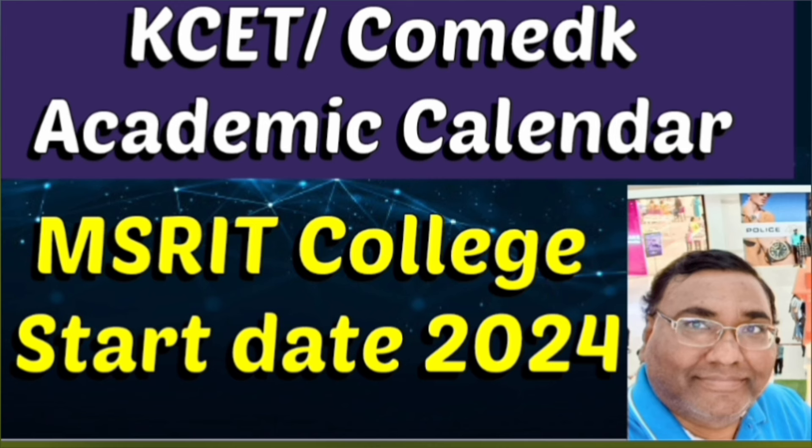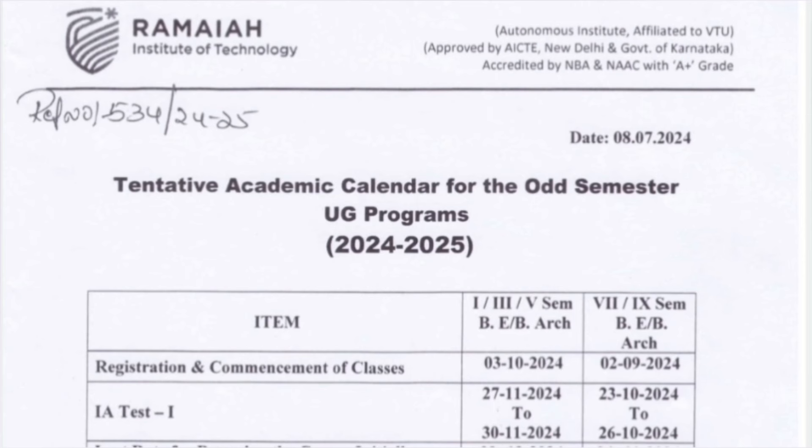In this video I am covering MS Ramaiah Institute of Technology, MSRIIT, and this is about their academic calendar, their college start date. Let's see the notification from MSRIIT — it says tentative academic calendar for odd semester UG programs 24-25.